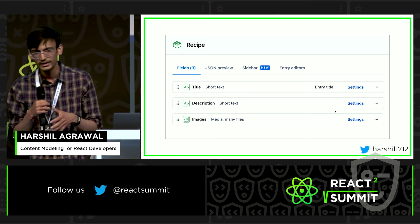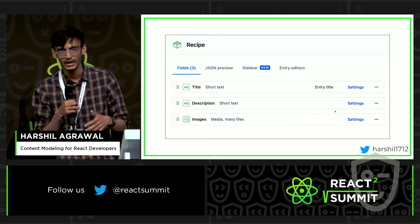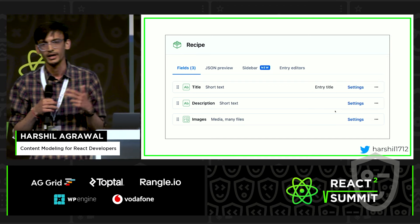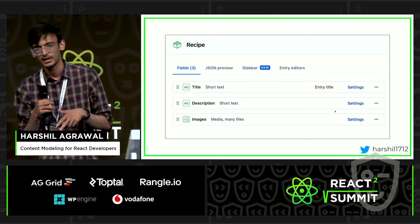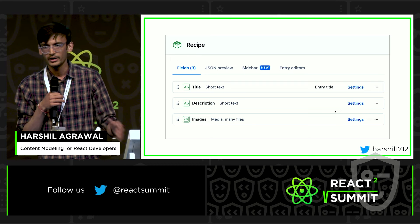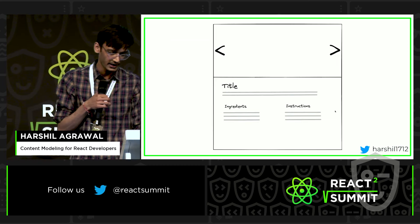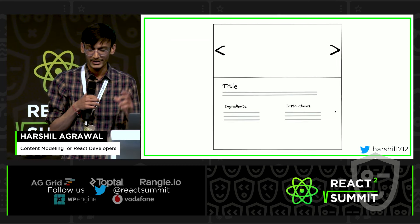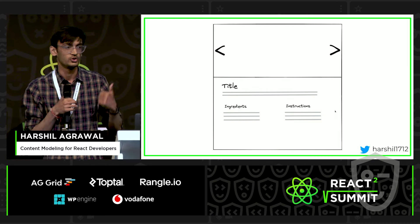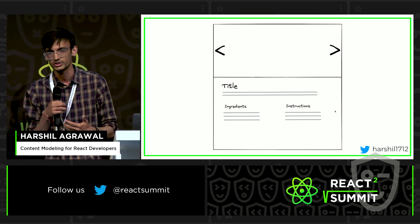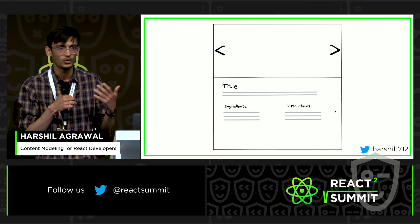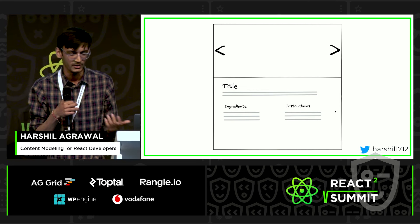A simple web app showing a list of recipes, where each card has an image, a title, and a description. This simple wireframe gave me an idea of what information I need in my content type. In Contentful, this is what my content model looks like for the Recipe content type — I have the title, the description, and images. But we are missing two important things. If you open any of those recipes, it needs to have those ingredients as well as the instructions on how to cook them, otherwise it's just a mess.